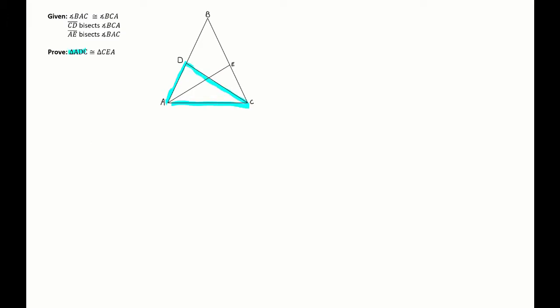We're going to try a triangle proof here, paragraph proof style again, proving two triangles congruent. This one takes some work and some spatial visualization. Let's look at what two triangles we're trying to prove first, because there's a whole bunch of triangles inside this diagram. Triangle ADC here in blue, trying to prove it congruent to triangle CEA in pink.